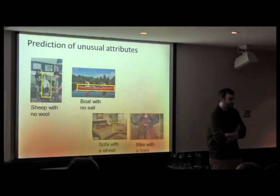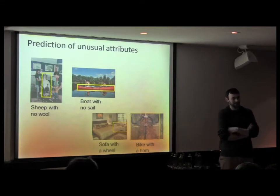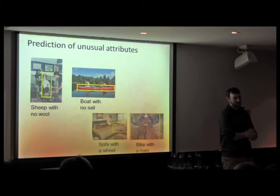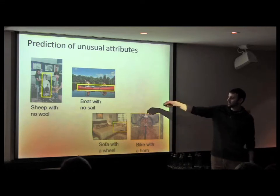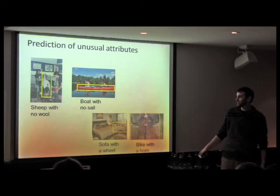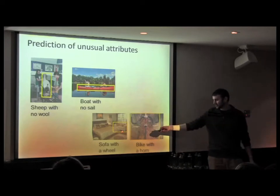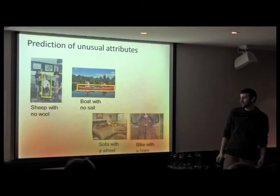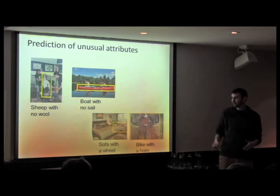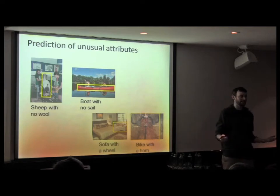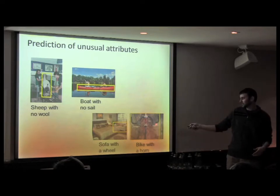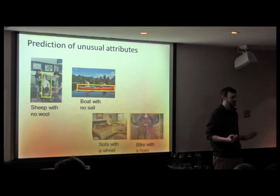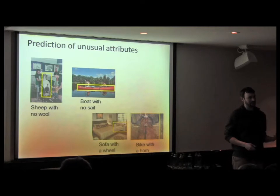Another thing we're interested in is telling what's unusual about some objects. We can learn from the training set what attributes you'd expect from a particular category, then detect unexpected attributes in testing. Some examples: a sheep that doesn't have any wool; a boat that doesn't have any sail; a sofa that has a wheel; a bike that has a horn. Some of these aren't correct — the sofa doesn't have a wheel, but its pillows kind of look wheel-like; the bike doesn't have a horn, but it has a horn-shaped handlebar. So these descriptions tell you something about the visual properties of those objects.